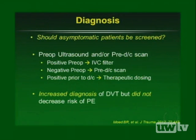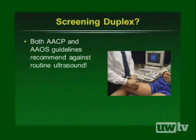Moed's 2012 study of asymptomatic patients showed that screening with preoperative ultrasound followed by IVC filter placement if positive, and a pre-discharge scan if negative, improved DVT diagnosis but did not decrease PE risk. The goal remains reducing fatal PE rate of 1%. MRV and CTV are very sensitive but Stover strongly advised against them due to high false-positive rates. Screening duplex is now opposed by both CHEST and AAOS.